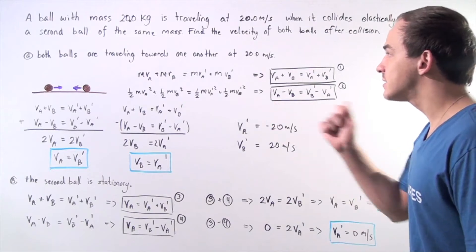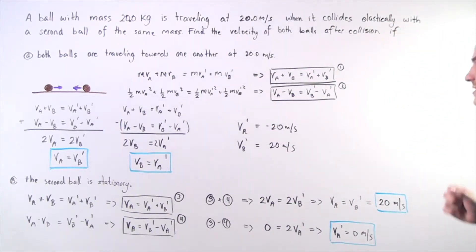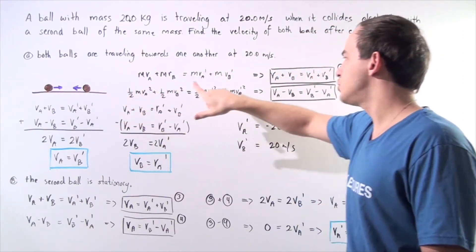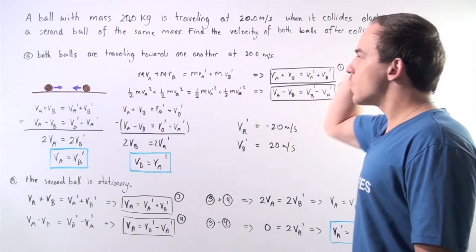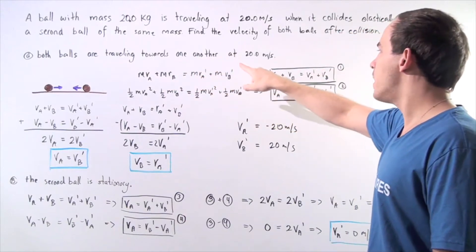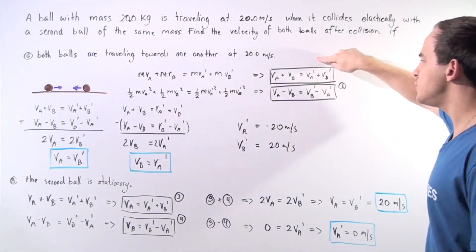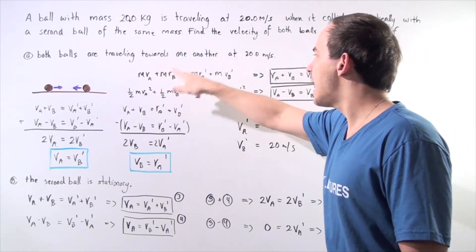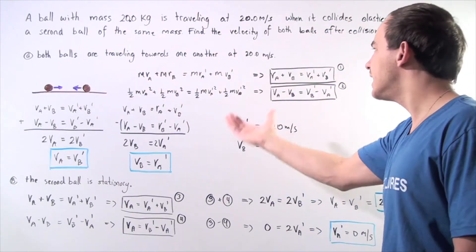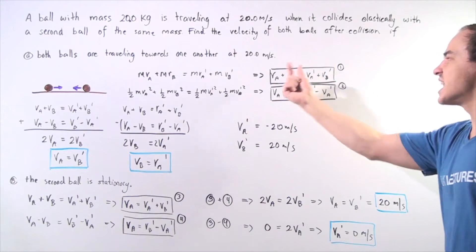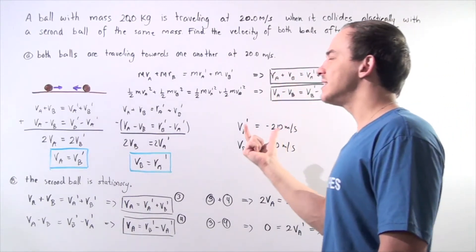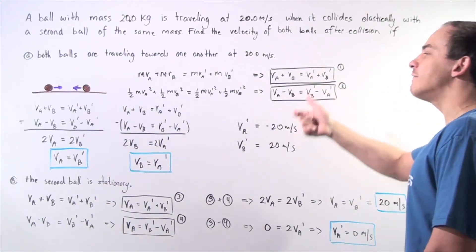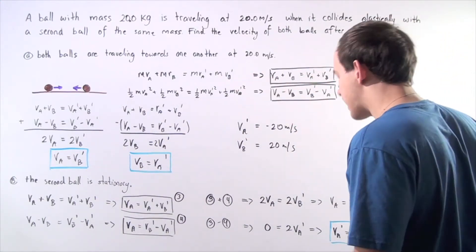Because this collision is elastic, we have conservation of momentum and conservation of kinetic energy. From conservation of momentum, we get equation one. We cancel out the m's because the masses are identical, giving us: the sum of the initial velocities equals the sum of the final velocities.